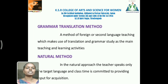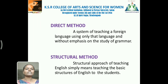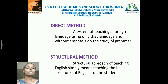In the grammar translation method, a foreign or second language is taught using translation and grammar study as the main teaching and learning activities. In the natural method, the teacher speaks only the target language and class time is committed to providing input for acquisition. The direct method is a system of teaching a foreign language using only that language, without emphasis on the study of grammar. The structural method simply means teaching the basic structure of the English language to students.